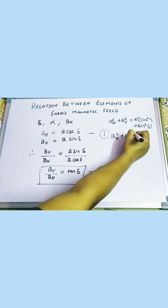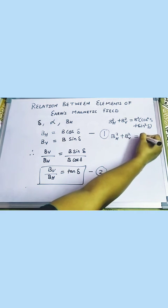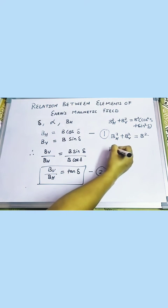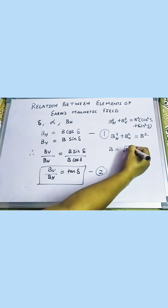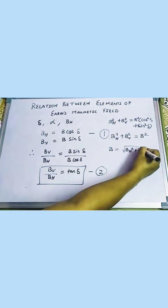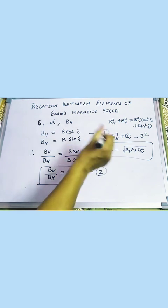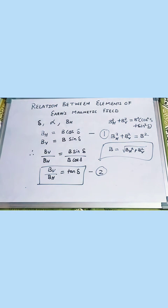So we got the relation as B equals the square root of BH² plus BV², where BV is the vertical component. The total magnetic field can be calculated with the help of horizontal and vertical components of Earth's magnetic field. This is helpful for finding the magnitude of the magnetic field at any place on Earth's surface.